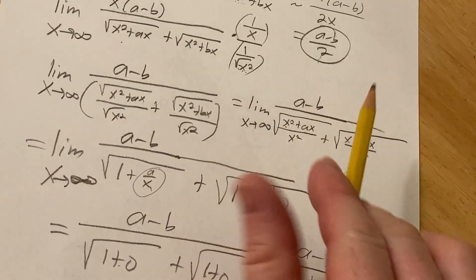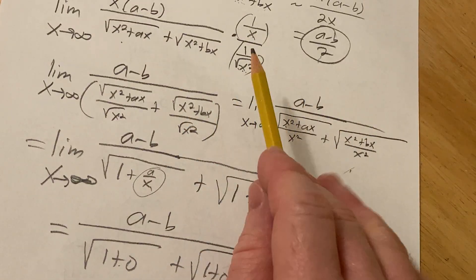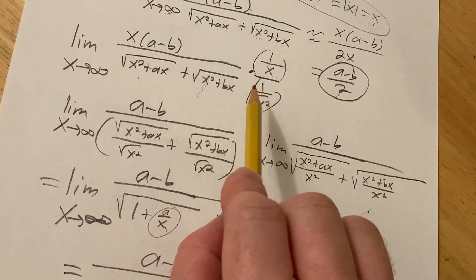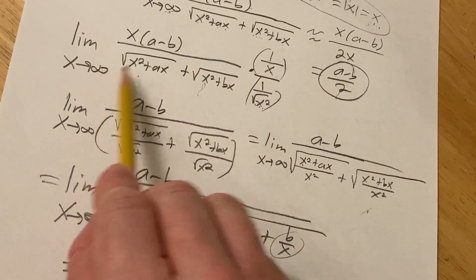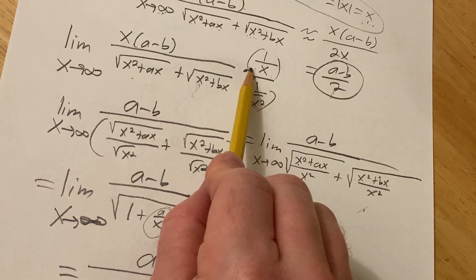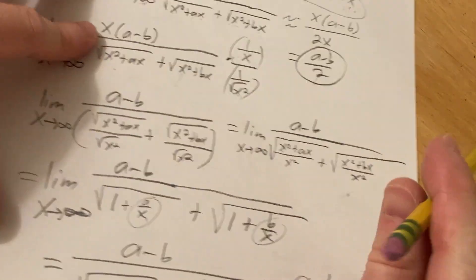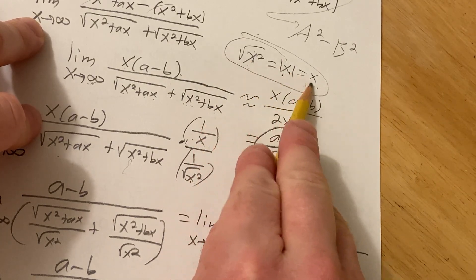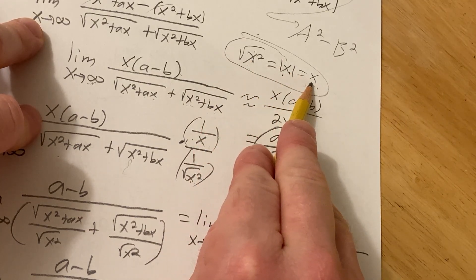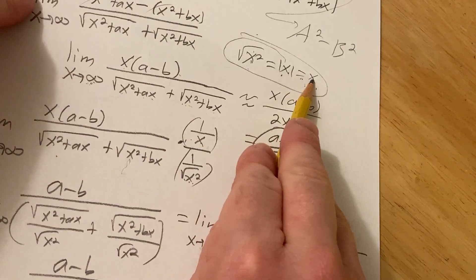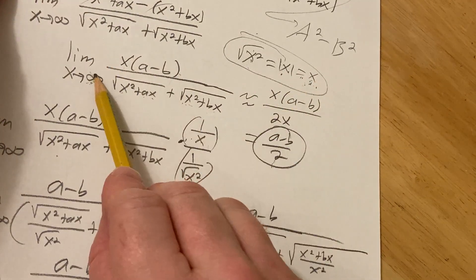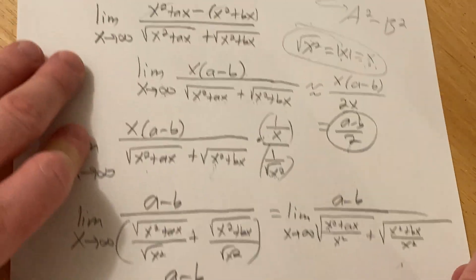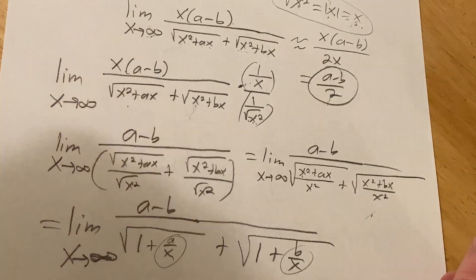If x were approaching negative infinity, you would have a negative sign in front, because the square root of x squared is the absolute value of x, which is negative x when x is negative. This is a good strategy whenever you have square roots like this — use the rationalization maneuver. Kind of a cool problem.